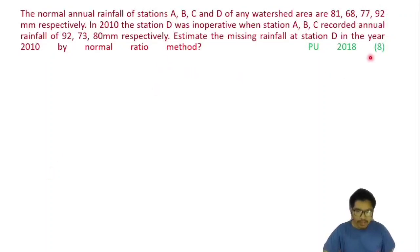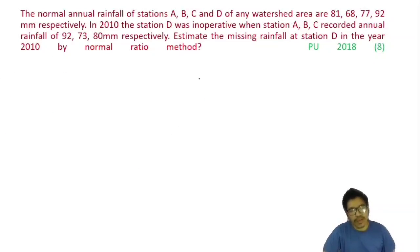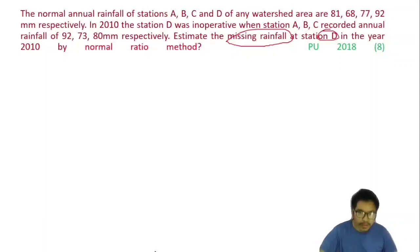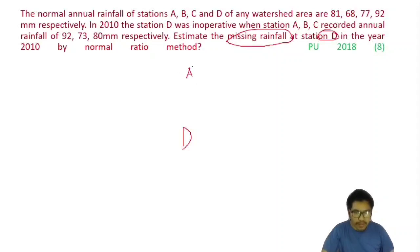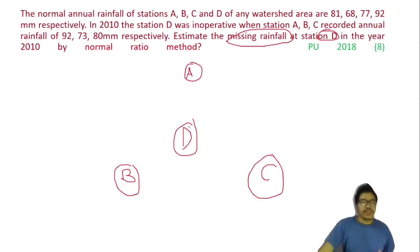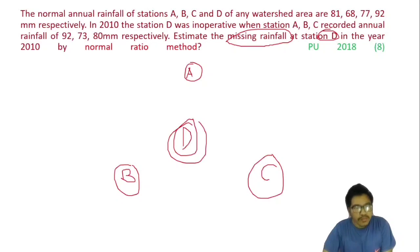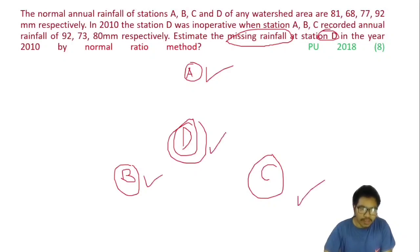This question was asked in Prevention University 2018. We have to estimate the missing rainfall at station D. The annual rainfall values are listed for stations A, B, C and D. We need to identify which values belong to each station and apply the normal ratio method formula accordingly.